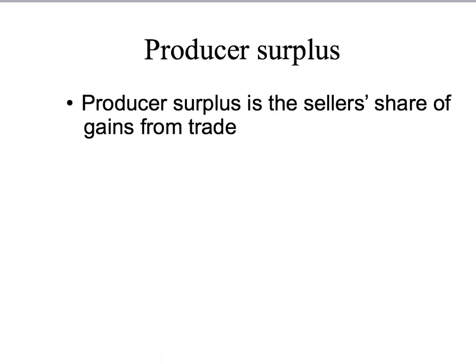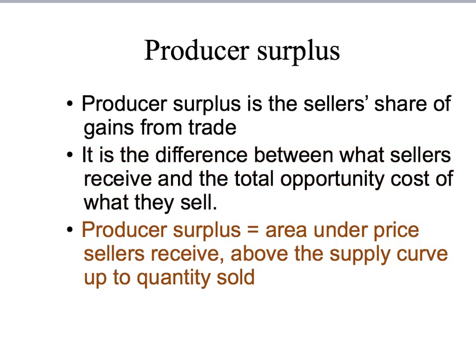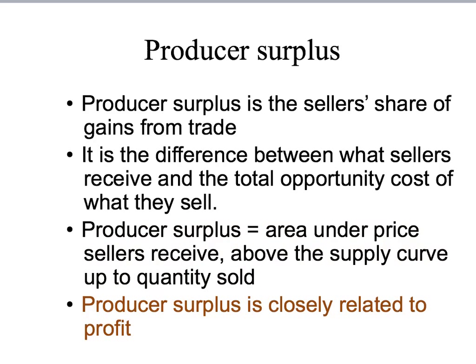So let's summarise. Producer surplus is the seller's share of gains from trade. It is the difference between what the sellers receive and the total opportunity cost of what they actually sell, and it is given by the area under the price sellers receive, above the supply curve, up to the quantity sold. Finally, note that producer surplus is closely related to a seller's profit — we'll look at that later in the course. But that is all for now. Talk to you next time.